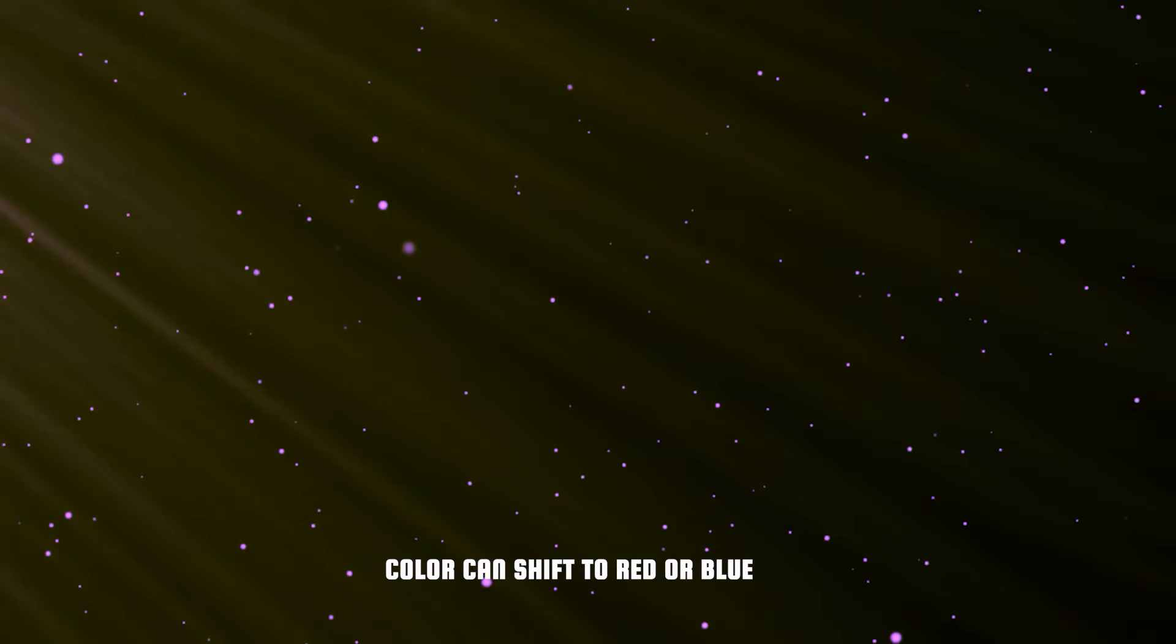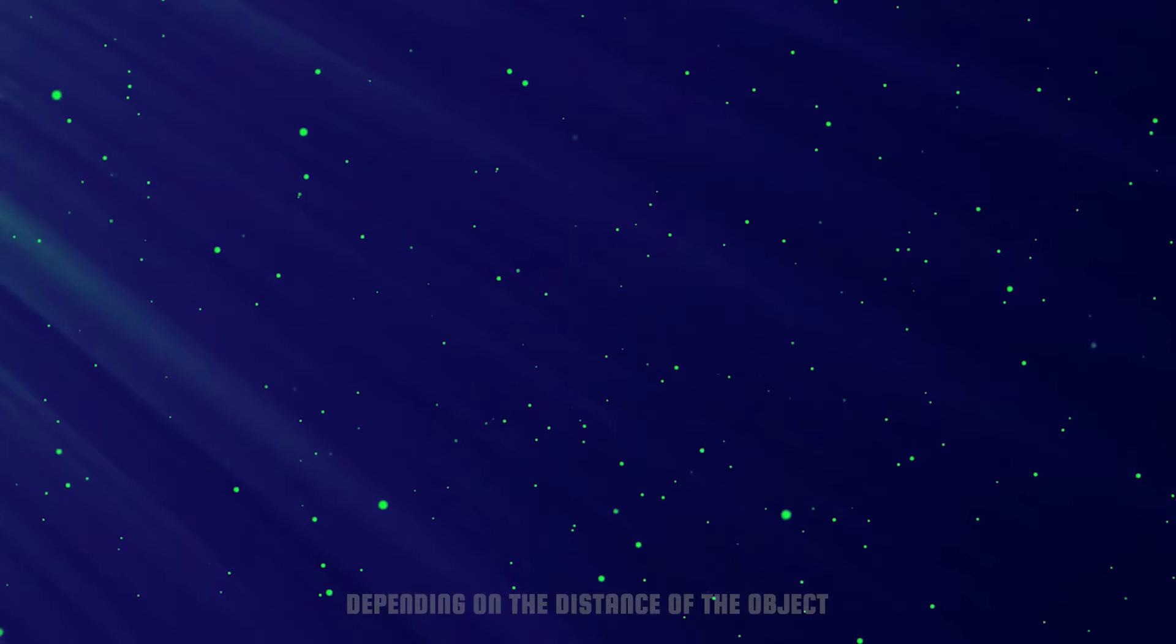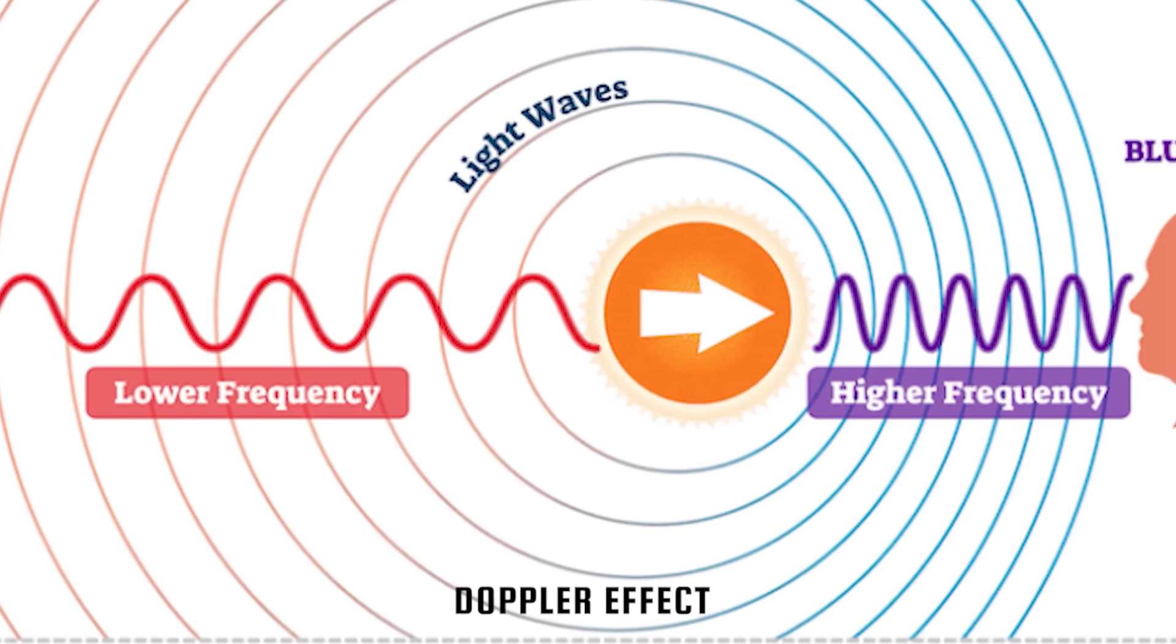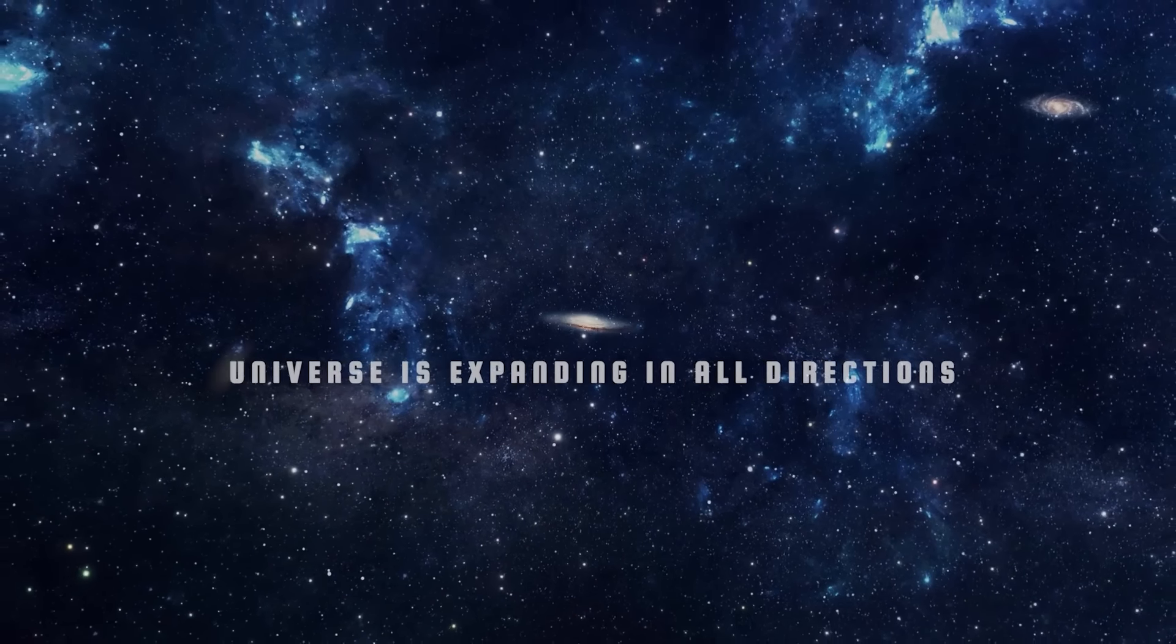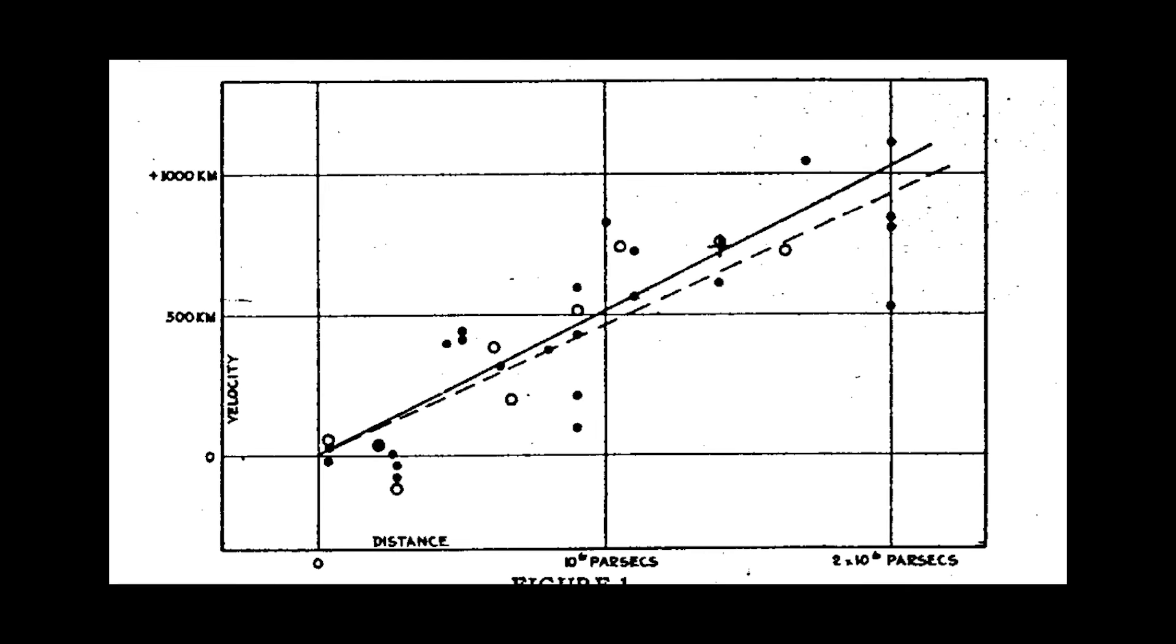The light, we said, contains a lot of information that must be decoded, and one of these concerns the movement in space of the object we are observing. The light waves, in fact, undergo a shift towards red or blue, depending on whether the source is moving away from us or approaching us. The phenomenon is commonly known as the Doppler effect, and the red color indicates that the galaxies are currently moving away from each other. The entire universe is in fact expanding in all directions, and with a speed well defined by the famous Hubble's law.